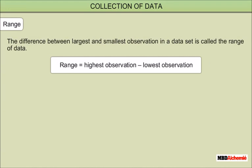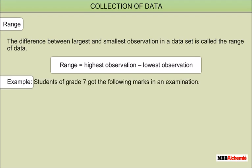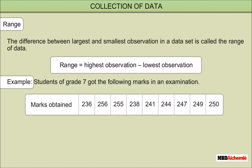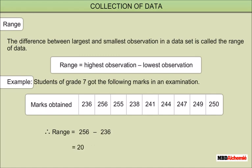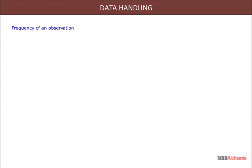Range: the difference between the largest and smallest observation in a data set is called the range of data. Range is equal to highest observation minus lowest observation. For example, students of grade seven got the following marks in an examination. The highest mark obtained is 256 and the lowest mark obtained is 236. Therefore, the range is equal to 256 minus 236, which equals 20.